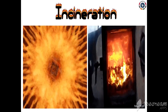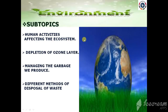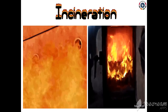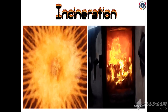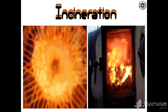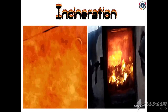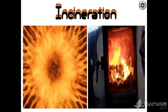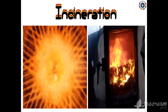To recap, today we discussed human activities affecting the ecosystem, depletion of the ozone layer, managing the garbage we produce, and different methods of disposal of waste including recycling, sewage treatment, preparing compost, landfills, and incineration. Please go through this video session at least twice, compare with your NCERT textbook, prepare your own notes, and write in your classwork notebook. You will also be receiving a worksheet regarding this chapter. Stay home, stay safe. Thank you.